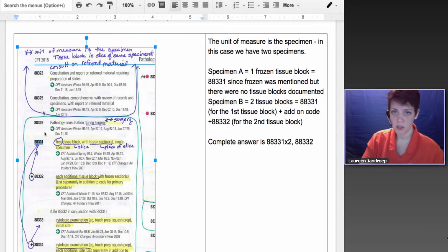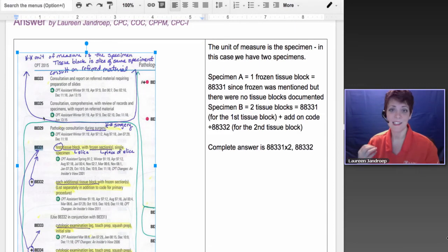So let's break this down. The unit of measure with these types of codes is the specimen. That's what we want to figure out first. Then we've got to figure out, was the specimen cut into X amount of pieces or not? So that's the way to view it.